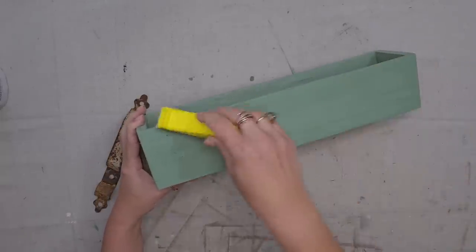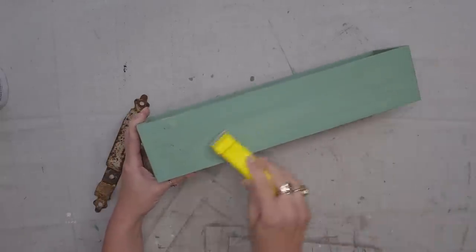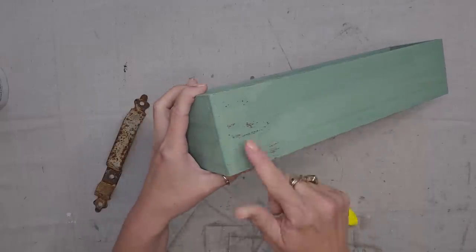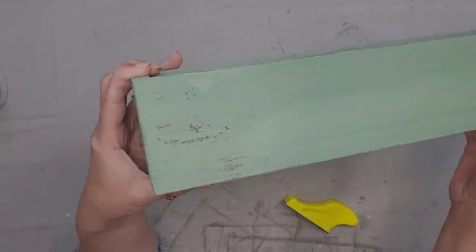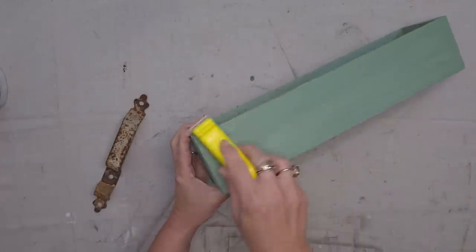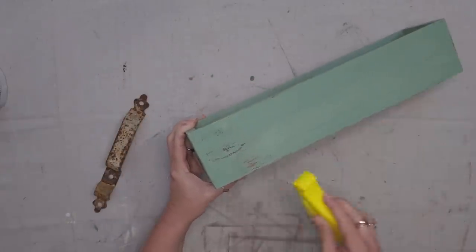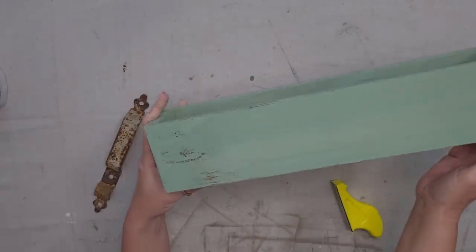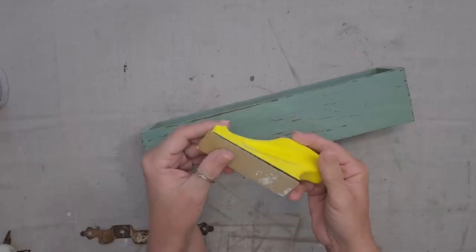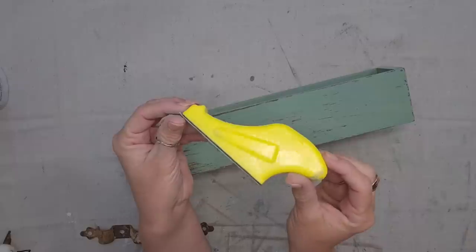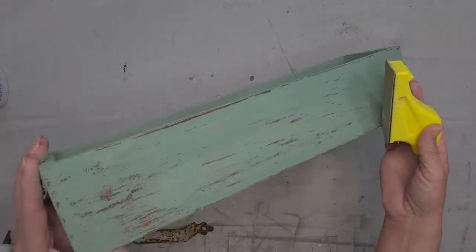Now that the second coat is dry, I want to take some sandpaper and just lightly sand the entire piece. And you'll see, look at all that crackle that is starting to chip up. This is why I love and use milk paint. I'm going to leave a link to this little sander in the description because it is such a handy tool to have at your craft table.